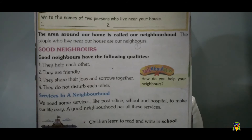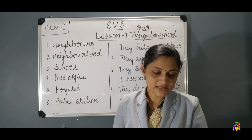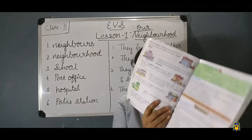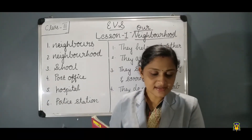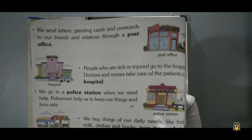Next heading: Services in a Neighborhood. We need some services like post office, school, and hospital to make our life easy. A good neighborhood has all these services. Children learn to read and write in school. Please underline that sentence. Now take the next page, page number 78. We send letters, greeting cards, and postcards to our friends and relatives through a post office. Please underline the word post office. People who are sick or injured go to the hospital. Doctors and nurses take care of the patients in a hospital. Please underline the word hospital. We go to a police station when we need help. Policemen help us to keep our things and lives safe. Please underline the word police station.